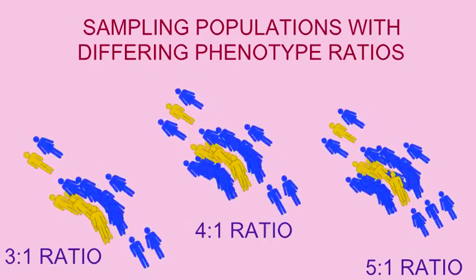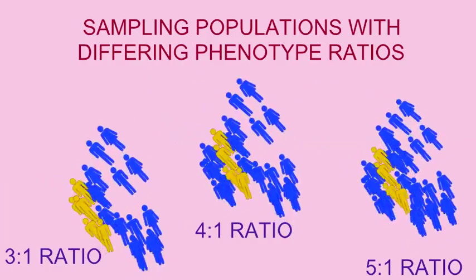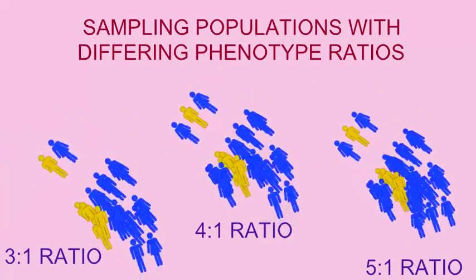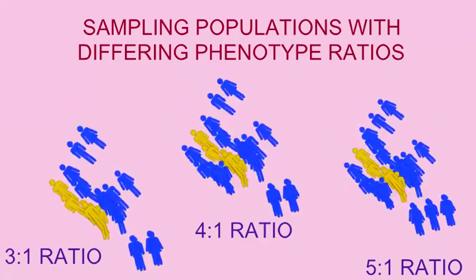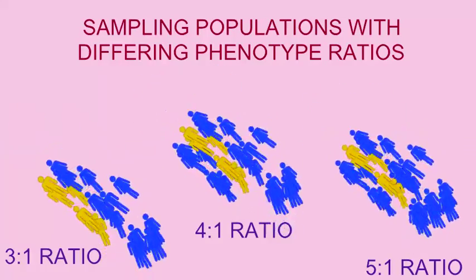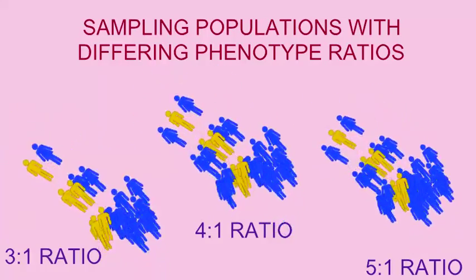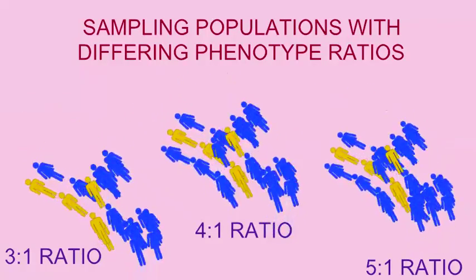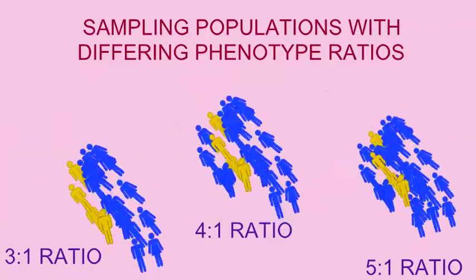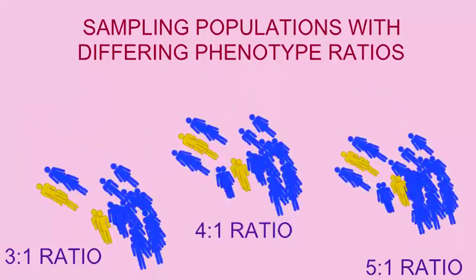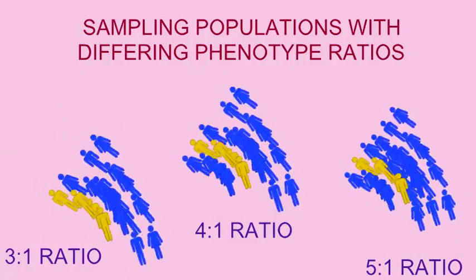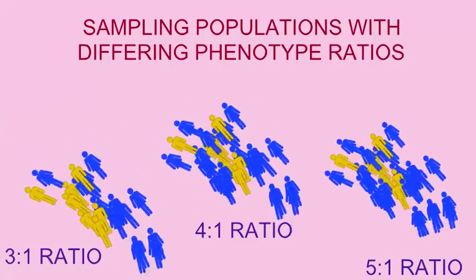The third population here has a 5 to 1 ratio, where 5 sixths of the individuals are blue and 1 sixth is yellow. If one were to sample these populations at random,